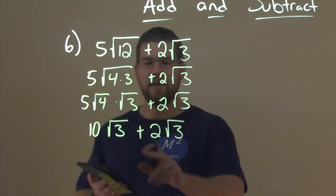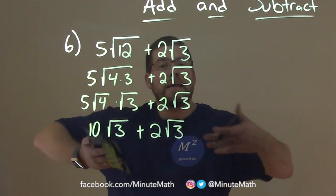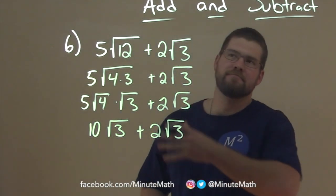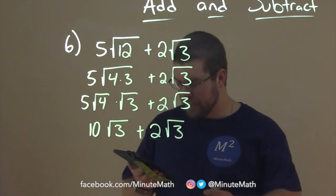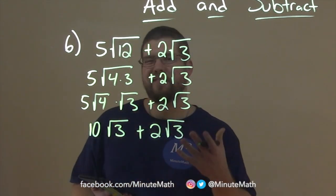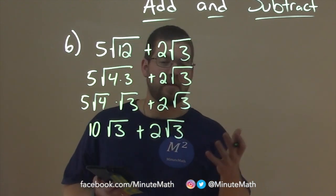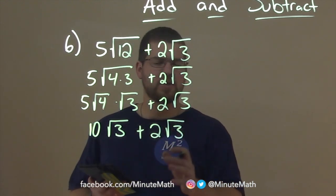At this point, we have the square root of 3 in both parts here, and so now we can add these radicals. And in doing so, I almost treat the square root of 3 like it's just a variable, and we add the numbers out in front. It's not exactly the right terms for it, but it helps us visualize that.